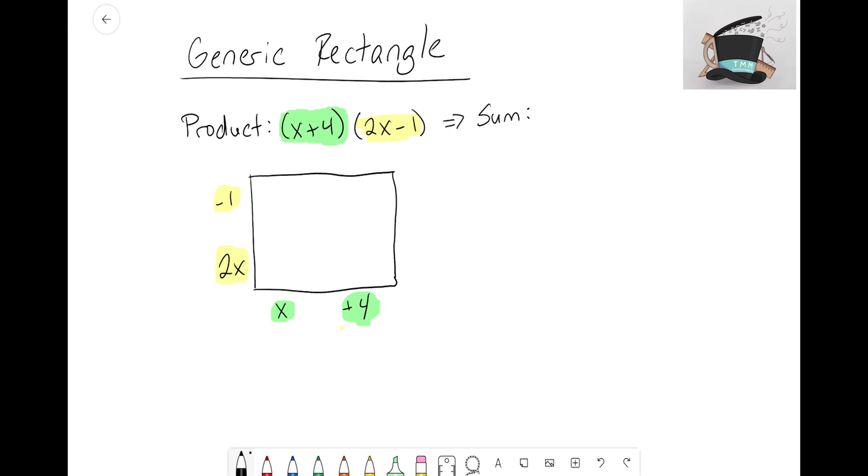We have 2x here and minus 1—this would be our x tiles and our unit tile. I'm going to separate that with a line going across to differentiate those two terms. Same thing for the bottom—I have an x and four unit tiles, so I'll draw a line going straight up to differentiate those terms. The next step is to fill in the area for this generic rectangle.